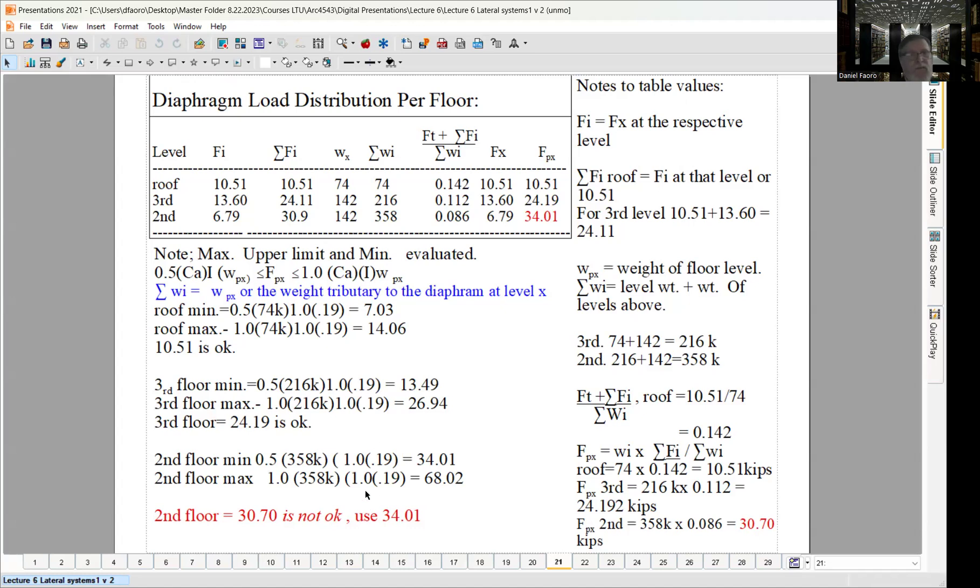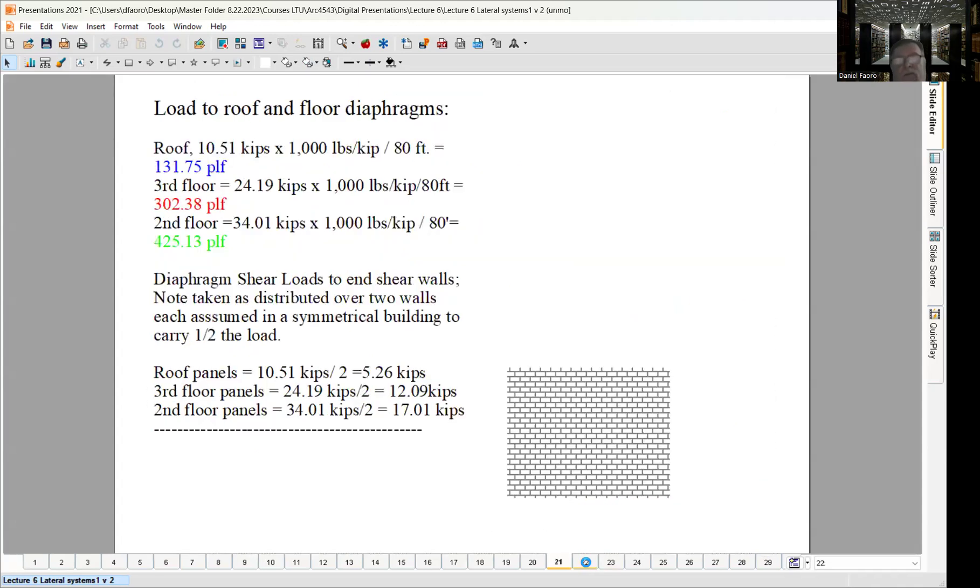But let's go back and check some of our limits. So, at the roof min, we have 7.03 kips. That's our minimum capacity. Roof max, 14.06. But we were at 10.51. So, we're okay. We can use that value. There's always a max. The diaphragms have a max limit cap as well. Our third floor min was the 13.49. Our third floor max was 26.94. We calculated 24.19. That was shown here. We're okay. We can use that value. But we run into a problem. We run into a problem at our second floor. Our second floor min is 34.01. Second floor max, 68. We calculated 30.70. So, we do have to step up to 34.01. So, there are cases where the max or min upset kicks in.